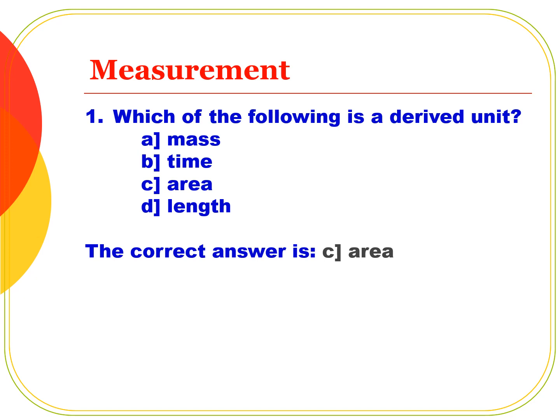There are 7 fundamental units: Length, Mass, Time, Temperature, Electric Current, Amount of Substance, and Luminous Intensity. These are the base or fundamental quantities. Derived units are obtained by multiplication and division of fundamental units — for example, Area is a derived unit.